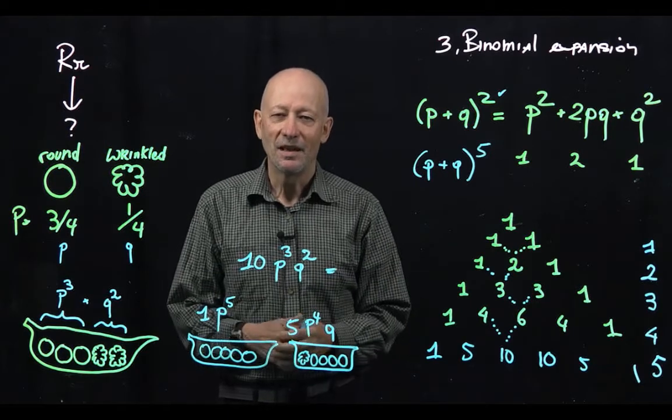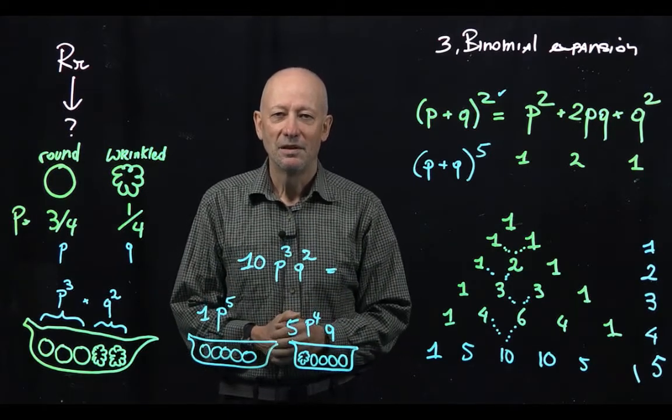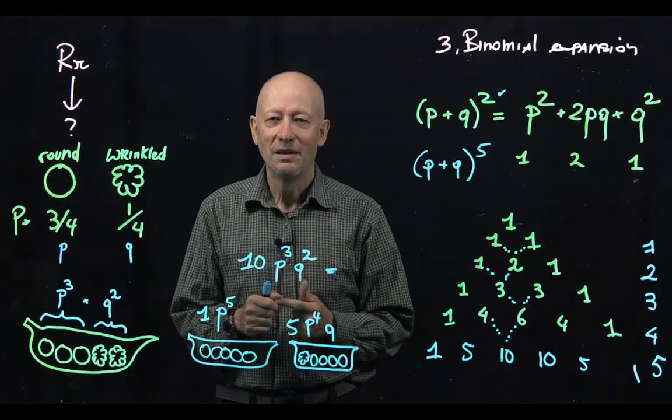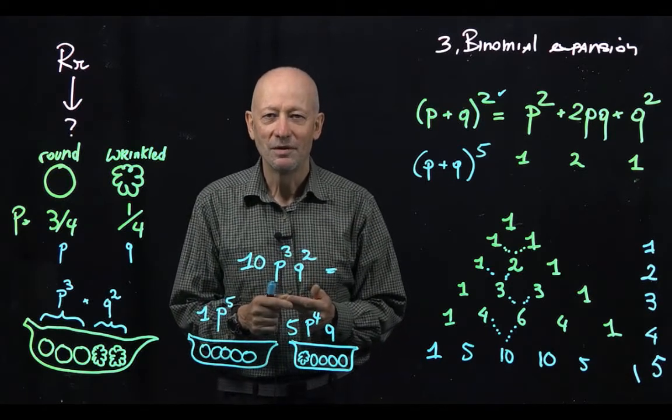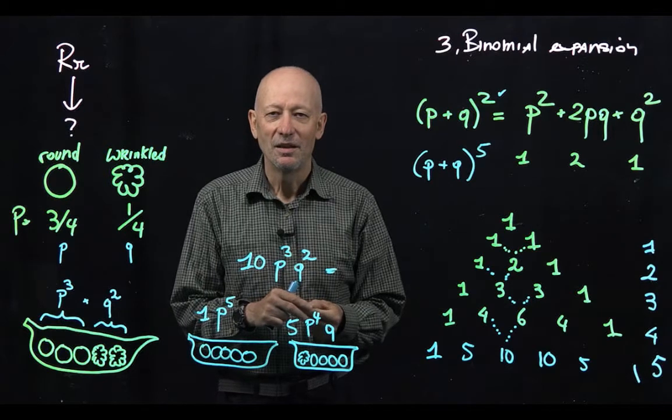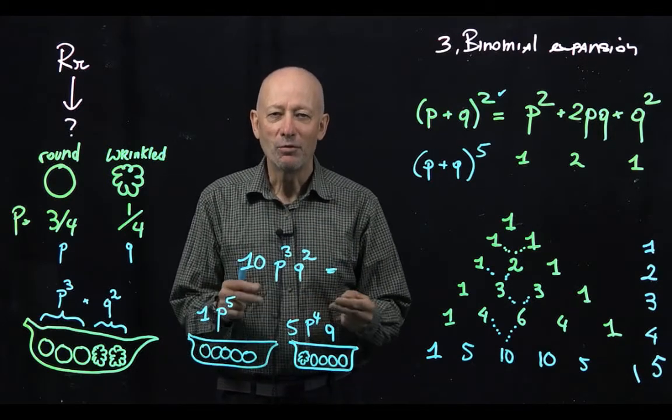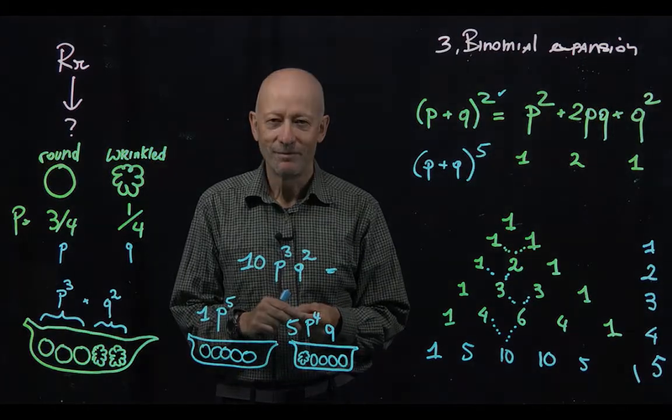In summary, I've given you three rules: the multiplication rule, the addition rule, and the binomial expansion. And you'll see that these three are going to enable us to solve a wide range of genetic problems. Thank you.